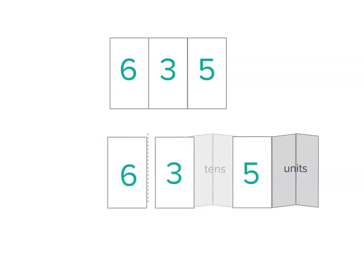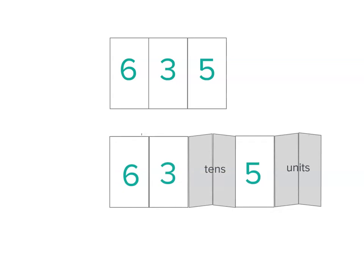What about this? Instead of 6 hundreds, I'm thinking of it as 60 tens. Plus I had 3 tens, so I've got 63 tens and 5 units.